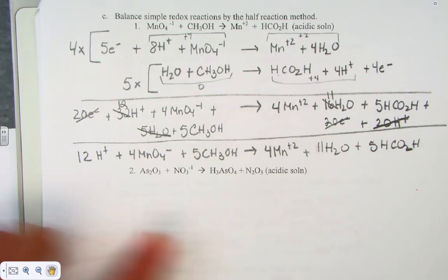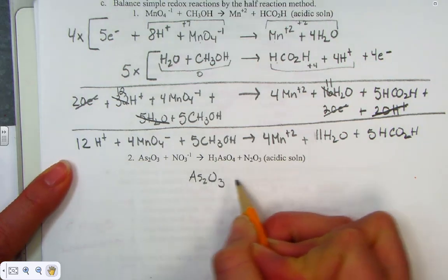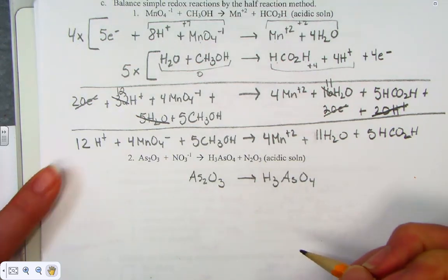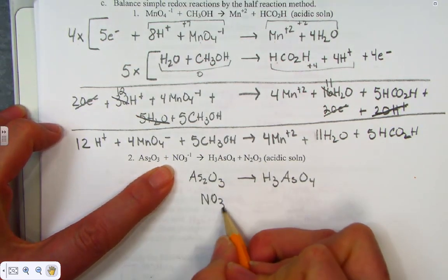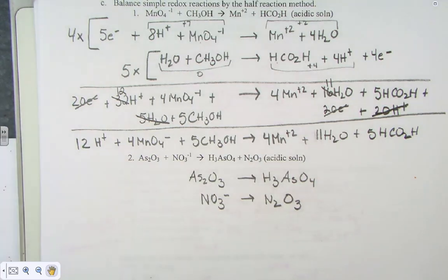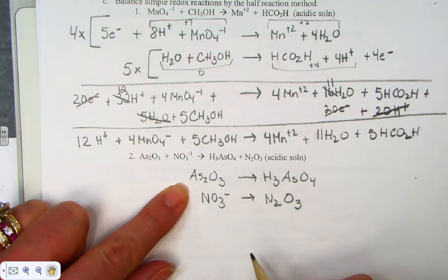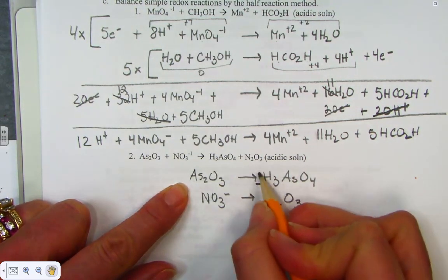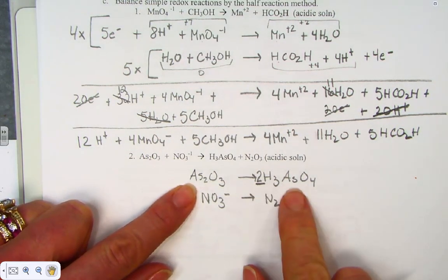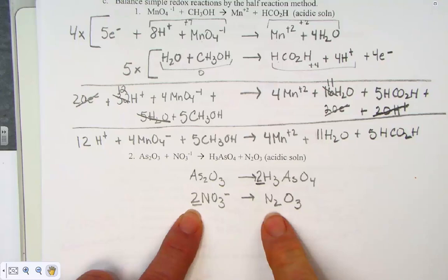Here's the second problem, still in acidic solution. Dividing into two half-reactions: AS₂O₃ forms H₃AsO₄, keeping like elements together; and nitrate ion goes to molecular dinitrogen trioxide, N₂O₃. We balance everything that's not H or O first, doubling the product side in the first half-reaction to balance arsenic, and doubling the reactant in the second to balance the nitrogens.